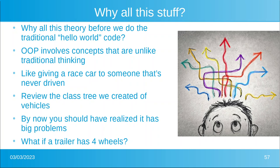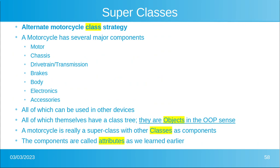If we just start programming it's like giving a race car to someone who's never driven — they wouldn't know what to do with the controls or even how to start it. Review the class tree from part one about vehicles. By now you should have realized it has a big problem: what if a trailer has four wheels? It wouldn't fit because the tree only had one-wheel and two-wheel branches. Redefining so many things would be wasteful, so we introduce a new concept called superclasses.